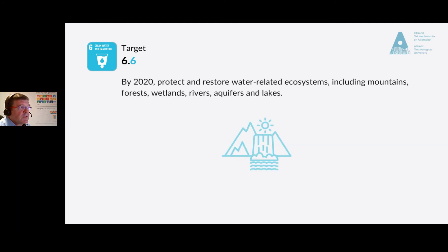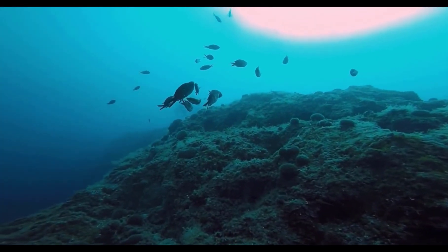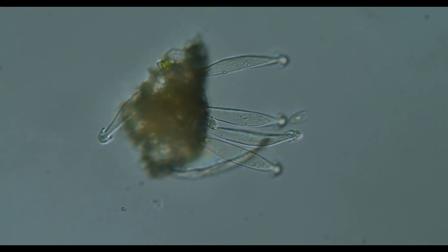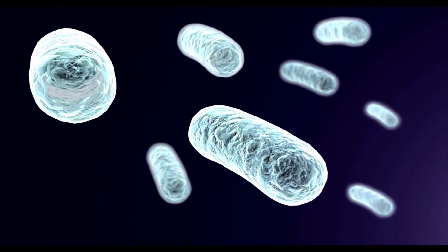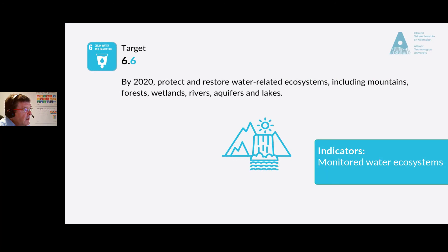Target 6.6: by 2020, protect and restore water-related ecosystems, including mountains, forests, wetlands, rivers, aquifers, and lakes. Water is a vital resource for biodiversity and human survival — virtually every living creature needs water to survive. Water pollution leads to toxic algae, meaning creatures and plants struggle to survive, resulting in increased waterborne diseases, loss of species, and disruption to the food chain. This target will be monitored through the change in the extent of water-related ecosystems over time.